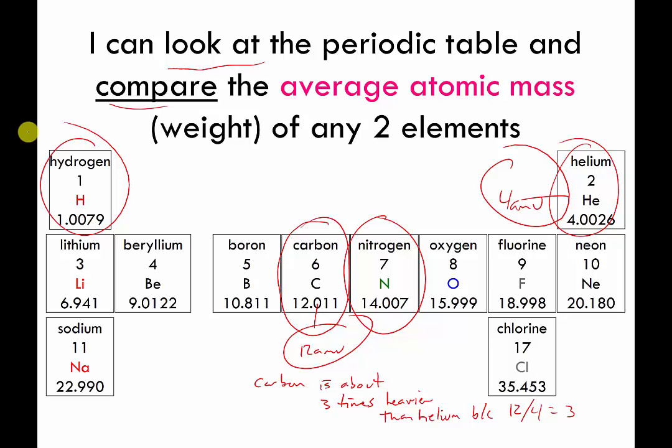You can do this for any of them. It won't always come out to be a whole number. It won't always be as simple as I just showed you but you can do it. You're just comparing their weights.